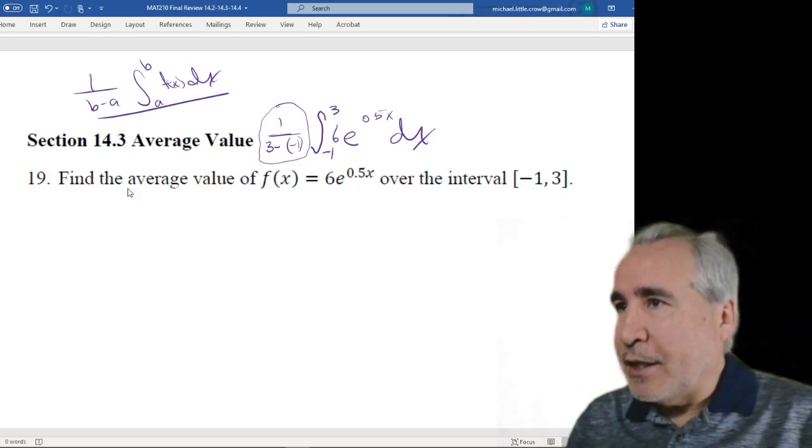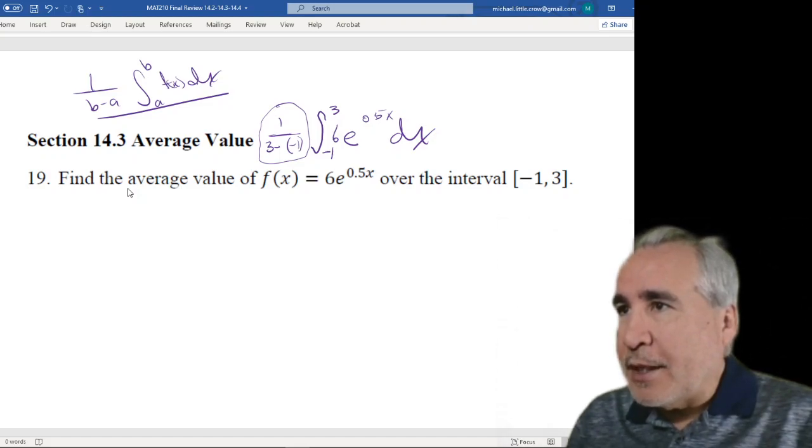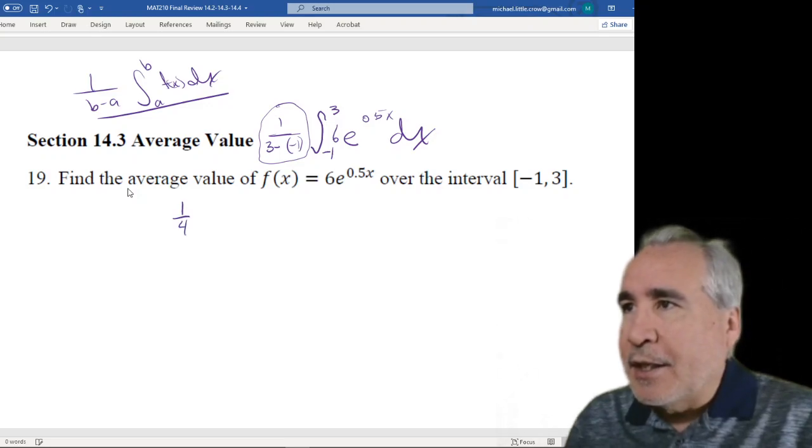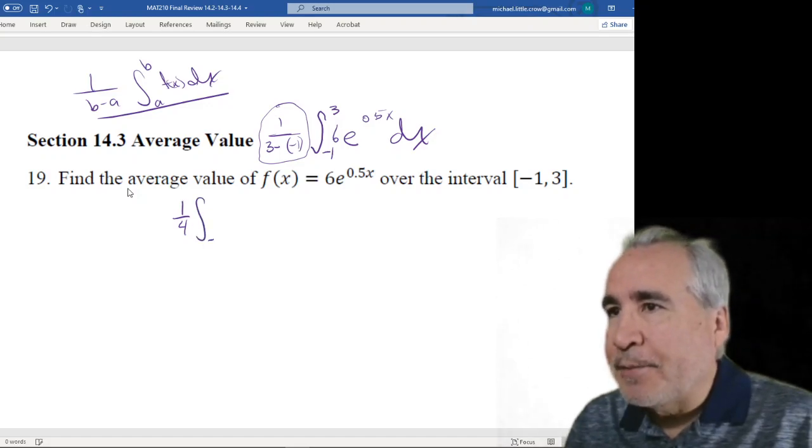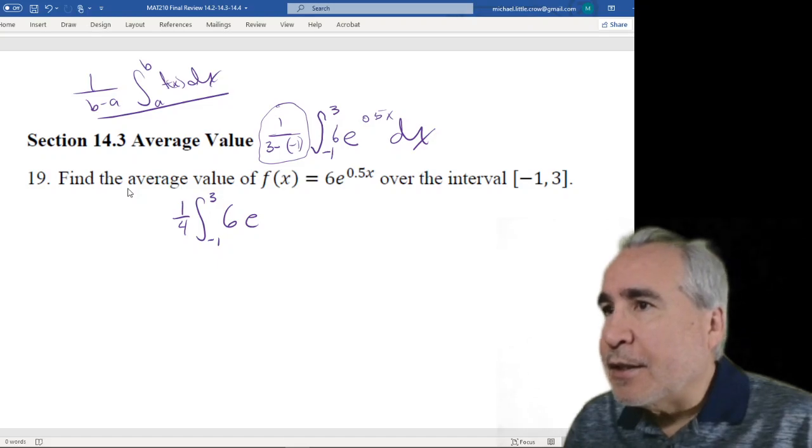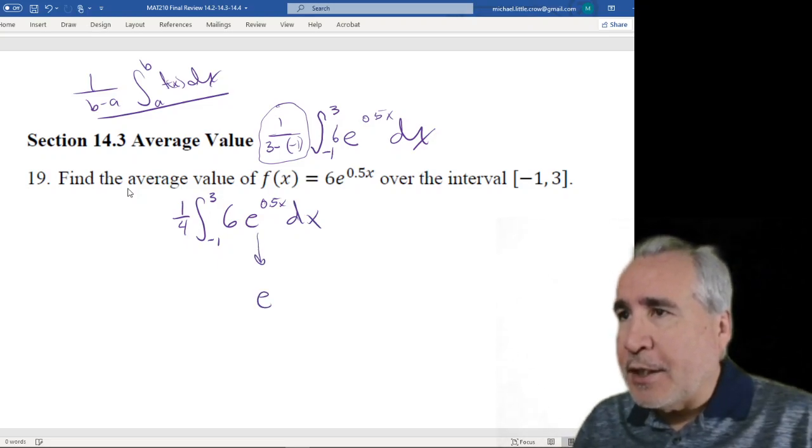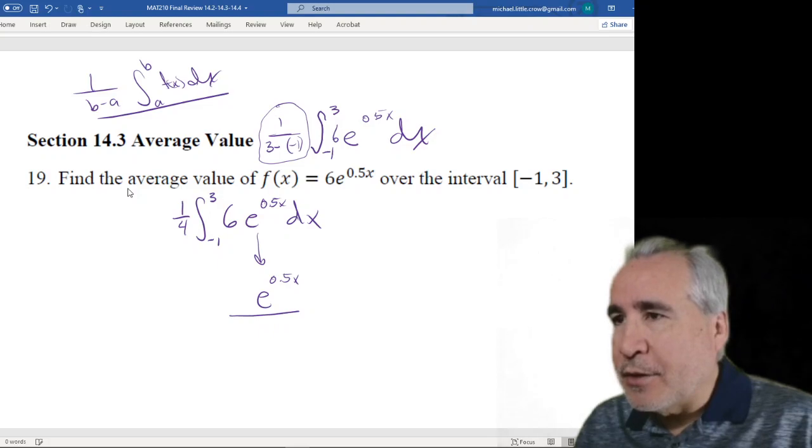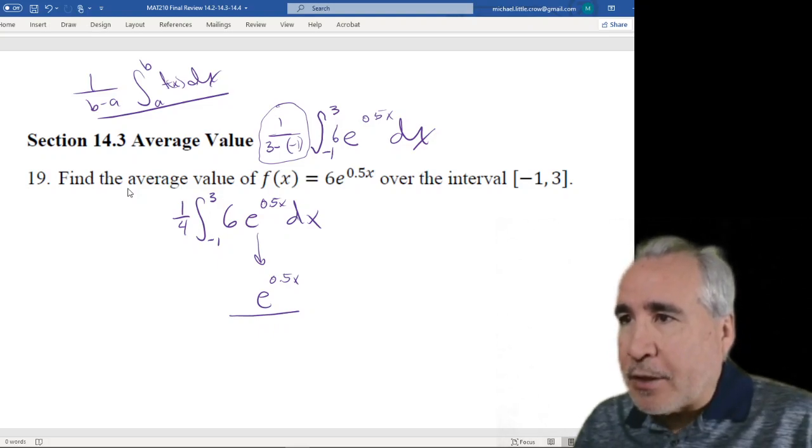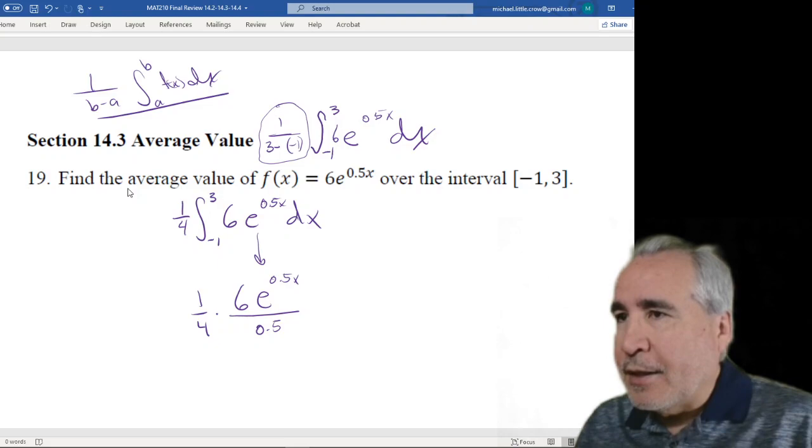So what we get in specific is we get, that's 3 minus minus, so that's a plus, that's 3, so that's 1 fourth out front. If you want, the 6 is a constant, so you could bring that out front as well. I'll leave it inside just so maybe it gets more understandable. E to the 0.5x dx, so we do integrate this.